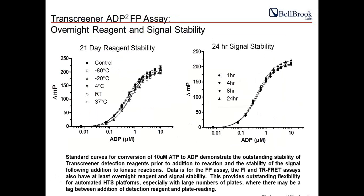An ideal assay requires excellent reagent and signal stability. Shown here are two graphs: reagent stability, where we prepared the ADP detection mixtures and stored them for 21 days at designated temperatures prior to adding freshly prepared 10 micromolar ATP-ADP standards. Day zero was prepared with fresh detection mixture, and they're right on top of each other — detection mixtures are very stable for 21 days, even at 37 degrees. Signal stability shows the standard curve read at zero hours, one hour, four hours, and so on — the signal is very stable, with error bars representing standard deviations of 24 replicates.